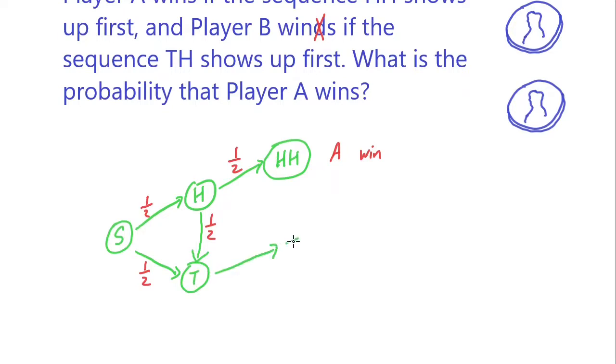In state T, you can get a head, in which case you get TH. In this case B wins. And what if you get a tail?